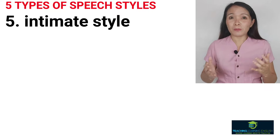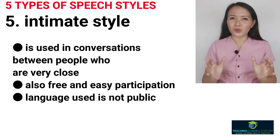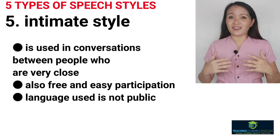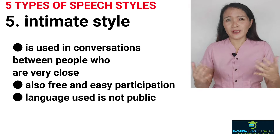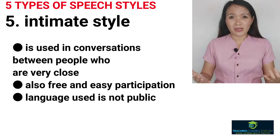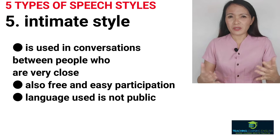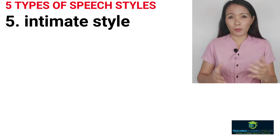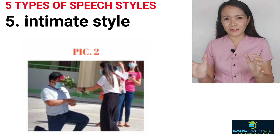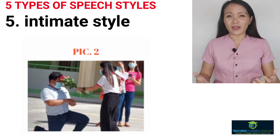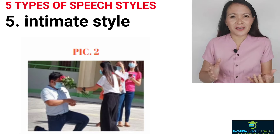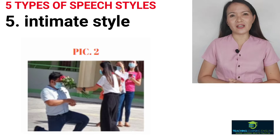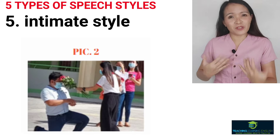The last one is intimate style. This style is used in conversations between people who are very close, and it also has free and easy participation. The language used in this style may not be shared in public. The best example in the picture is the boyfriend-girlfriend picture. That's why endearments like 'honey,' 'babe,' and 'mahal' are used for two people who are in love. We also have endearments for our parents.